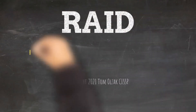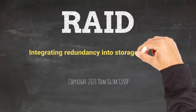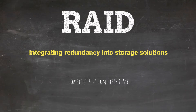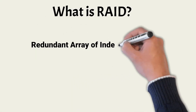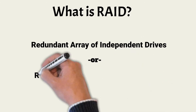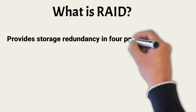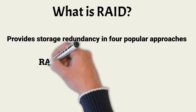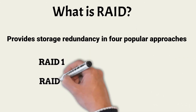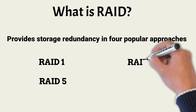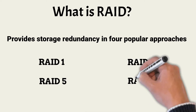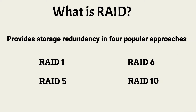In this lesson, we explore how to integrate redundancy into storage solutions with the appropriate RAID configurations. The acronym RAID is interpreted as Redundant Array of Independent Drives or Redundant Array of Inexpensive Disks. RAID provides redundancy to protect storage in four ways, called RAID 1, RAID 5, RAID 6, and RAID 10. There are other RAID levels, but they are not commonly used or supported.